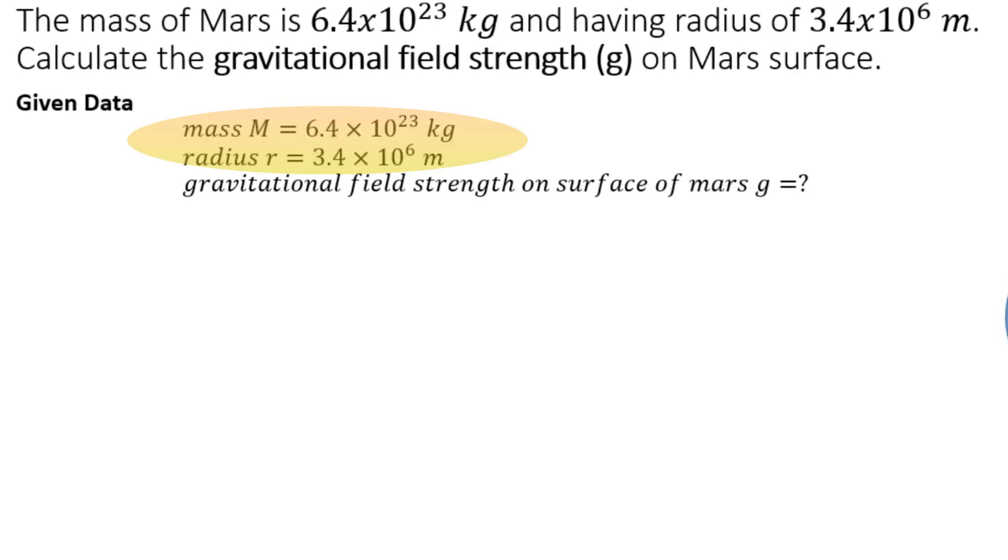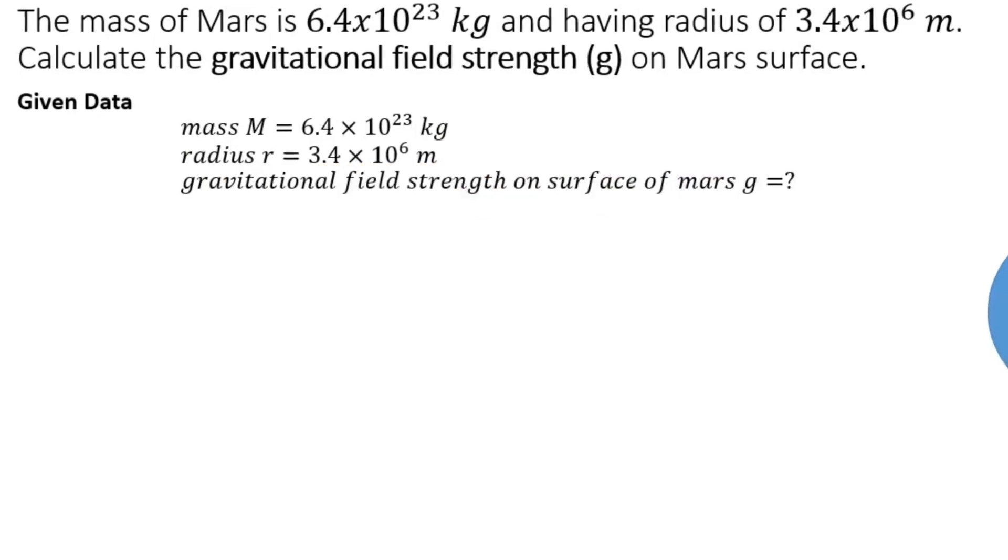We know that mass of Mars is equal to 6.4 × 10²³ kilograms, and radius of Mars is equal to 3.4 × 10⁶ meters. Now for calculating the gravitational field strength on the surface of Mars, we will use Newton's